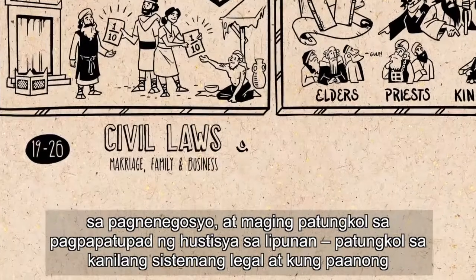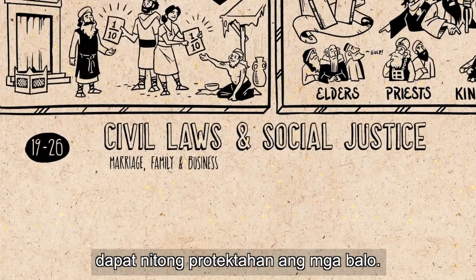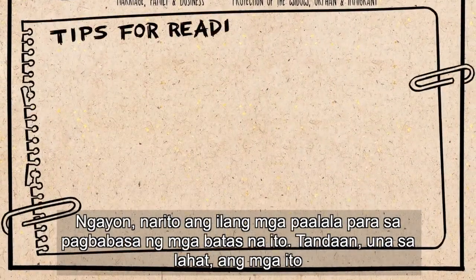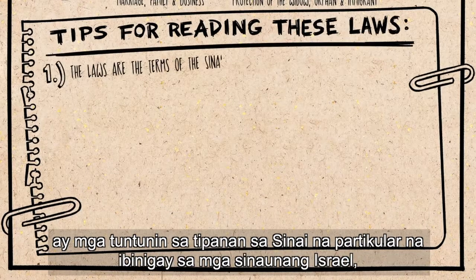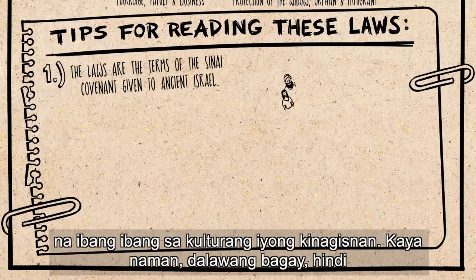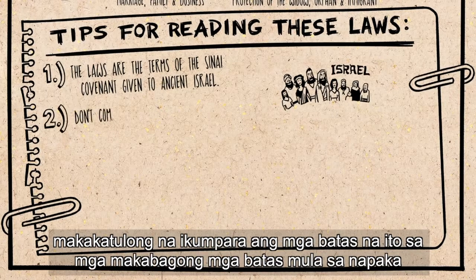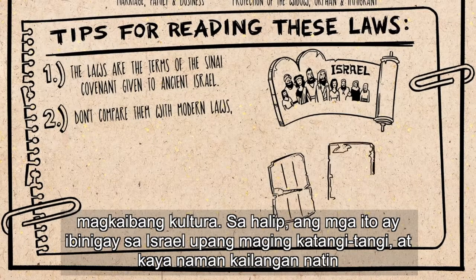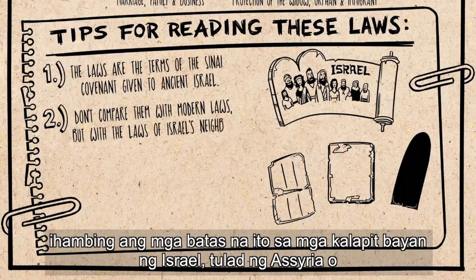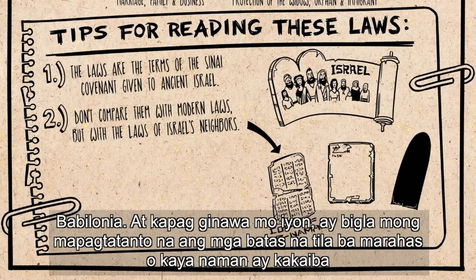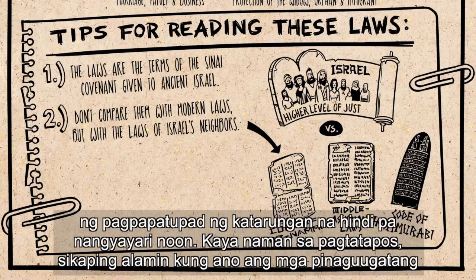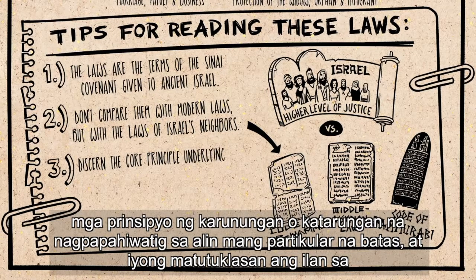Following this is a large section of laws about Israel's civil life — rules about marriage, family, and business, and also about social justice, including their legal system and how it was to protect widows, orphans, and immigrants. These are concluded by more laws about worship. When reading all of these laws, remember first that these are the terms of the Sinai covenant given specifically to ancient Israel, living in a culture very different from ours. It is not going to be helpful to compare these laws with modern laws from a very different culture. Rather, we need to compare them with those of Israel's neighbors, like in Assyria or Babylon. When you do that, laws that seemed harsh or bizarre become much more clear — you see that God is pushing Israel to a higher level of justice than was ever known before.